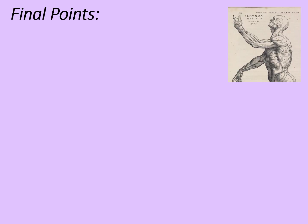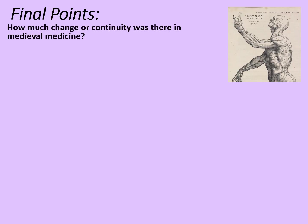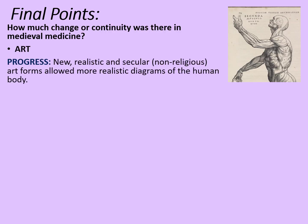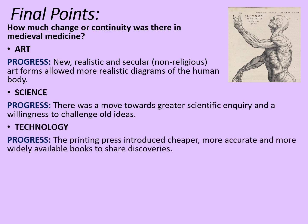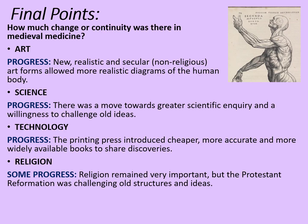In summary, how much change or continuity was there in Renaissance medicine? Art is an example of progress — new realistic and secular art forms allow more realistic diagrams of the human body, like the work of Andreas Vesalius. Science also represents progress, with a move towards greater scientific inquiry and a willingness to challenge old ideas. Technology led to progress — the printing press introduced cheaper, more accurate, and more widely available books to share discoveries. And religion also saw some progress — the Protestant Reformation was challenging old structures and ideas, showing that attitudes were changing too.